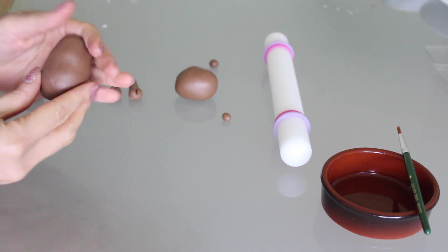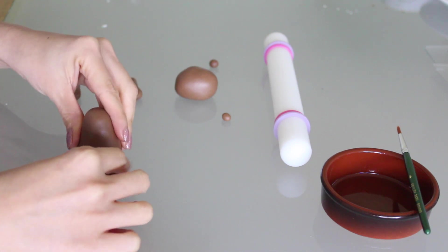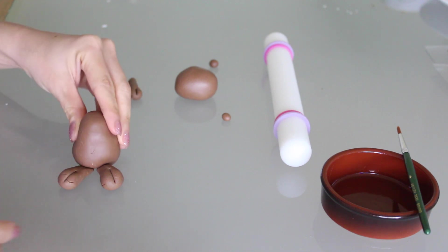Next, roll the large ball, meant for the body, into a pear shape. Flatten the ends of the legs slightly, and place them under the body.